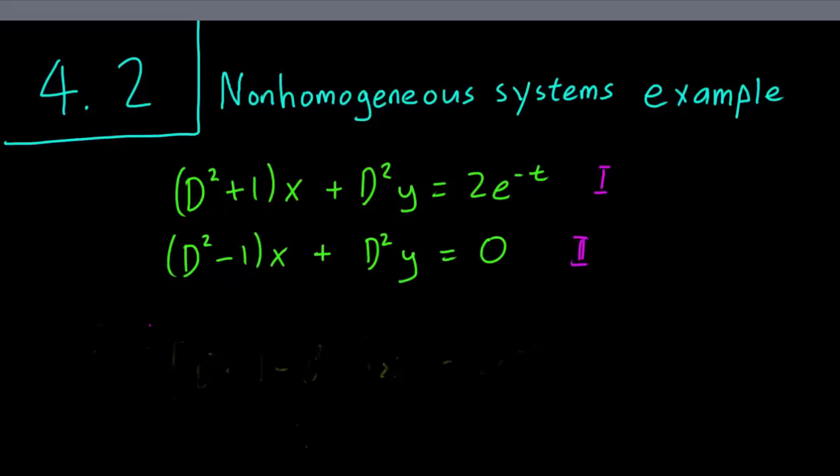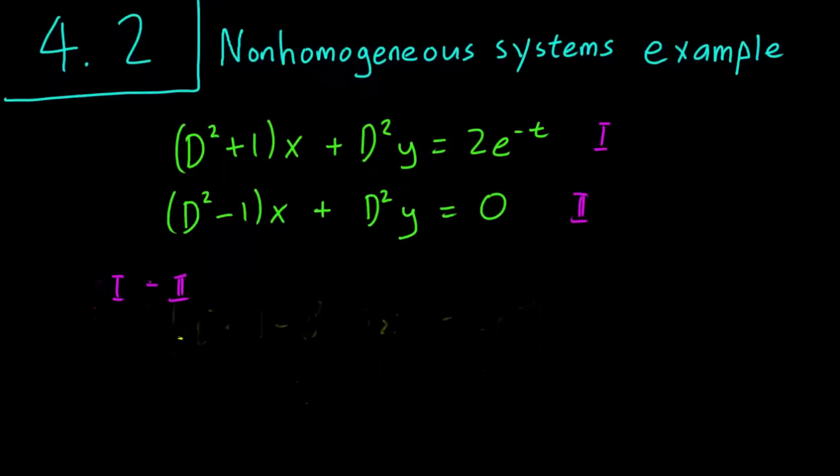So let's try to eliminate the y term first. We can see that the y term in both equations has a D squared in it, so we can just subtract one equation from the other. That's pretty straightforward. So equation I minus equation II. We just subtract the two x terms of D squared plus 1 minus D squared minus 1 applied to x and the y terms cancel of course.